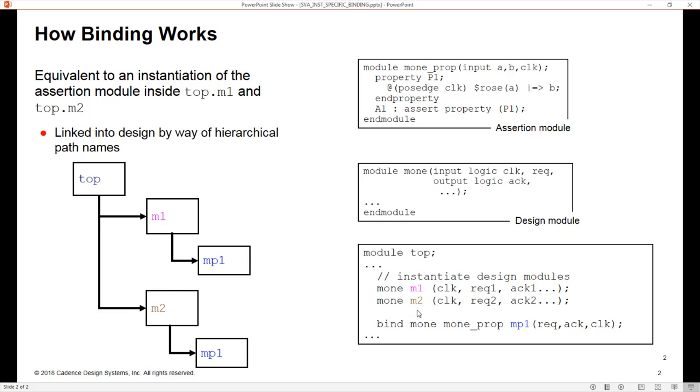If I had another module M3, M4, M5 and 6 and so on each one of those would have an instance named MP1 inside of it. But what if I didn't want an instance inside of M1, I only wanted an instance inside of M2, how could I do that? Before we show that one important point about this is that bind statement here does not need to be in the same scope as these instances. It could literally be anywhere.